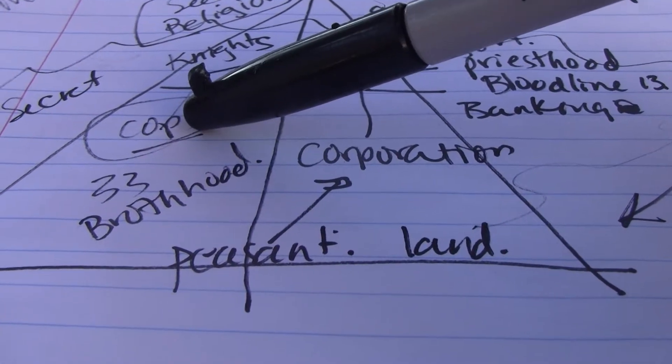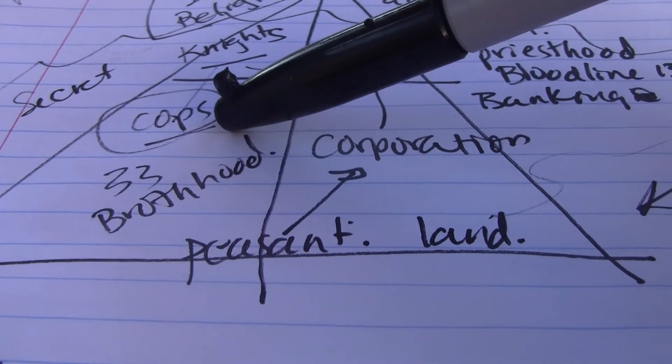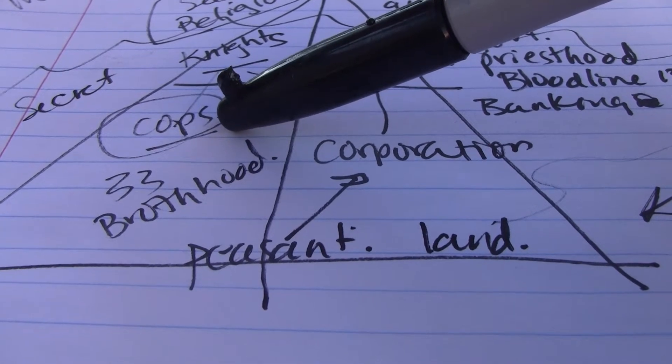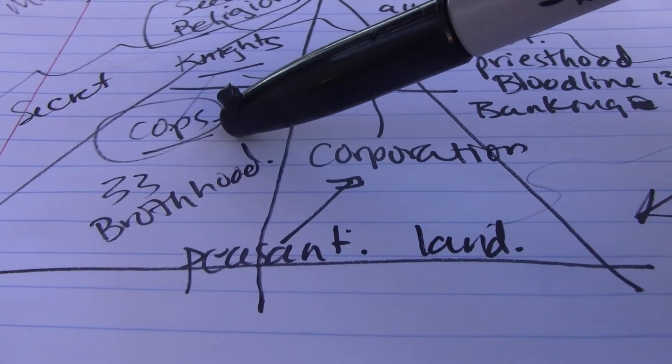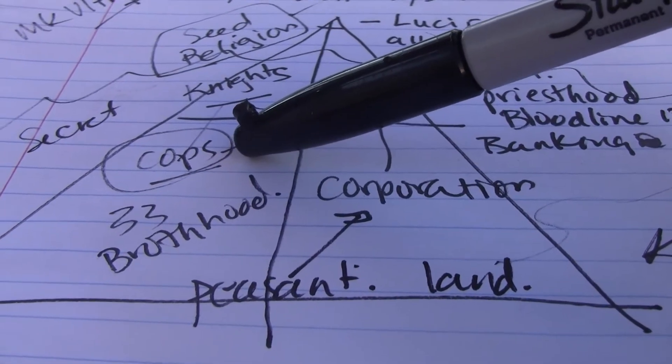The cops are implanted in their left eye. They have an ocular implant, and if you take a UV torch, their eyes light up. They've been compromised. This is the truth.